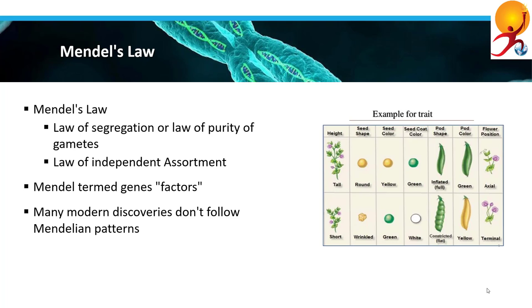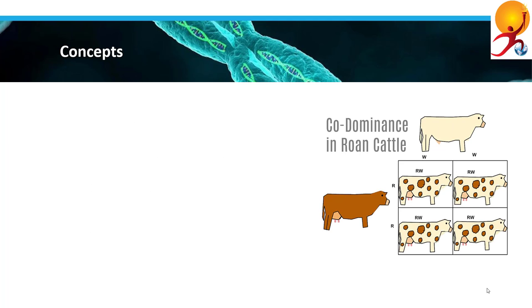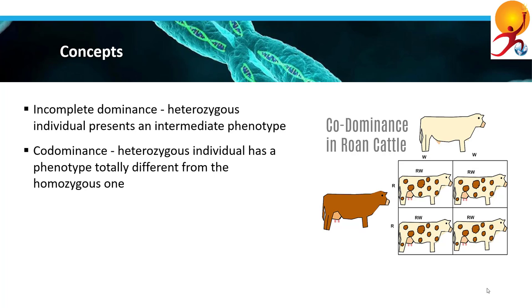Let's look at some other concepts. Incomplete dominance is when a heterozygous individual presents an intermediate phenotype between the two types of homozygous ones. An example is incomplete dominance in sickle cell anemia where the heterozygous individual produces some sickled red blood cells and some normal red blood cells. Another is codominance, where a heterozygous individual has a phenotype totally different from the homozygous ones and not an intermediate form.